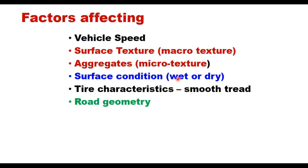The third factor is surface condition — whether it is wet or dry. Skid resistance on a wet pavement varies with the thickness of the water film on the pavement surface, and for a given speed, the thicker the water film, the lower the skid resistance.